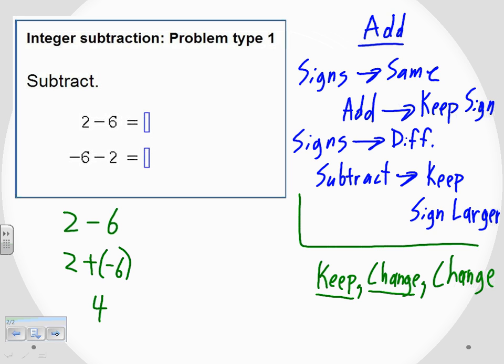Now, since we're doing this problem, the larger number is the six, and it is negative. So we need to keep that sign, negative four. So we turned our subtraction problem here into an addition problem, and then we used the rules for addition to find our solution. So the top one, negative four.